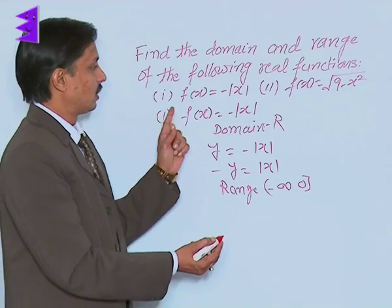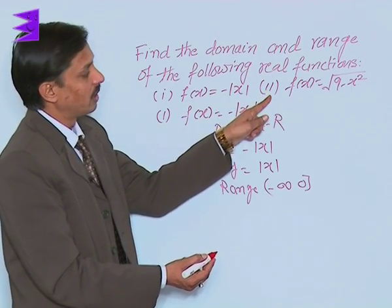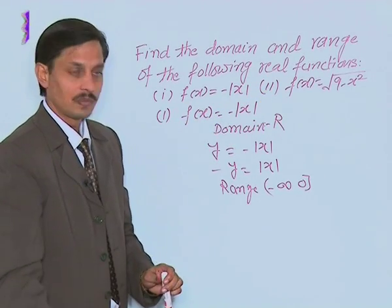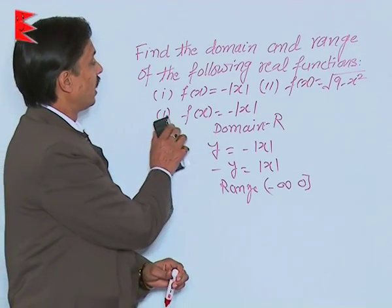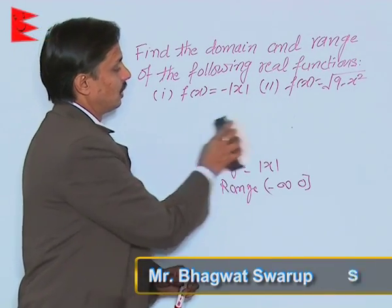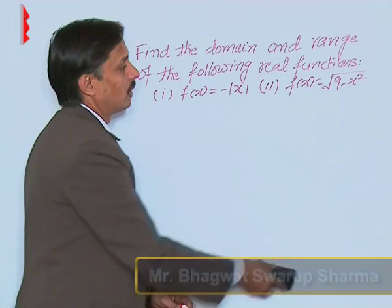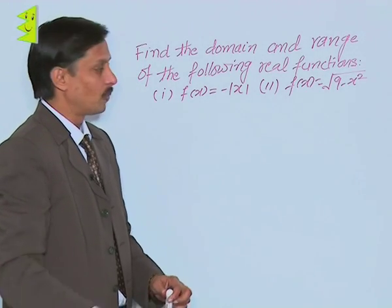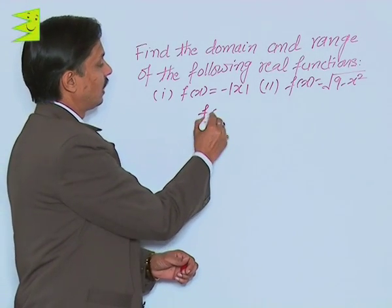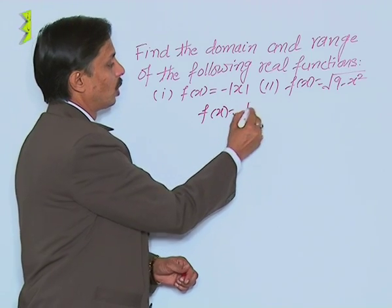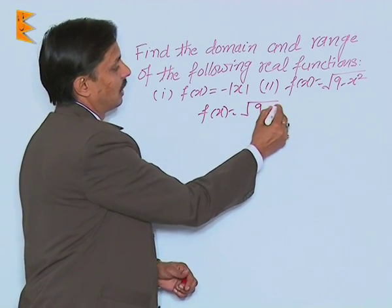Now, the problem is how to calculate the domain and range of the second part. To calculate the domain and range of the second part, the same method will be taken. First of all, f(x) is given as root of 9 minus x square.